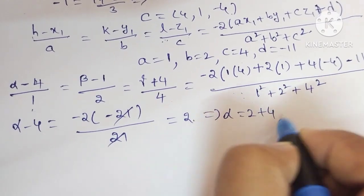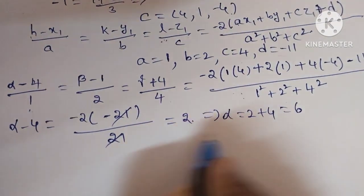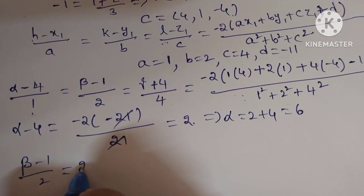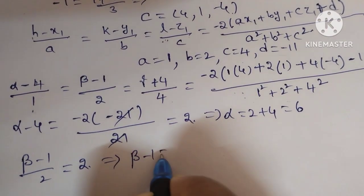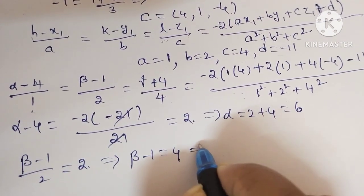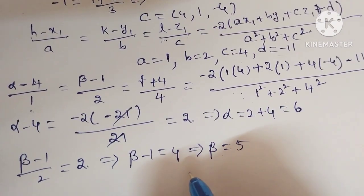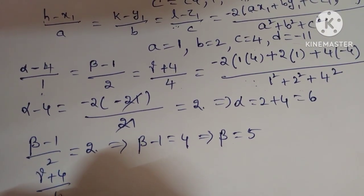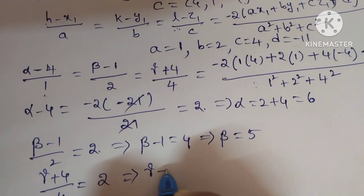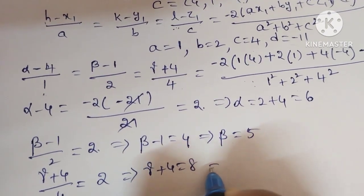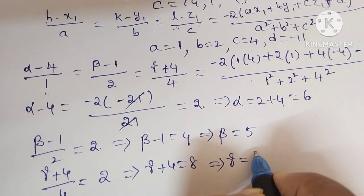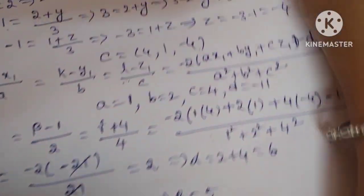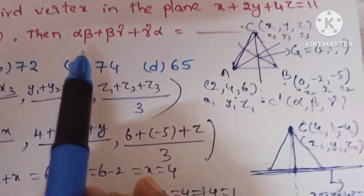From (alpha - 4)/1 = 2: alpha = 6. From (beta - 1)/2 = 2: beta - 1 = 4, so beta = 5. From (gamma + 4)/4 = 2: gamma + 4 = 8, so gamma = 4. We have found alpha = 6, beta = 5, gamma = 4.